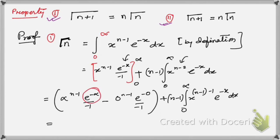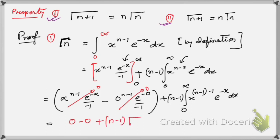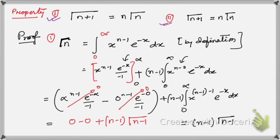The first two parts become 0 − 0 = 0, and we are left with (n−1)·Γ(n−1). So we have got Γ(n) = (n−1)·Γ(n−1). Now let me go to the next slide. So the result is: Γ(n) = (n−1)·Γ(n−1).